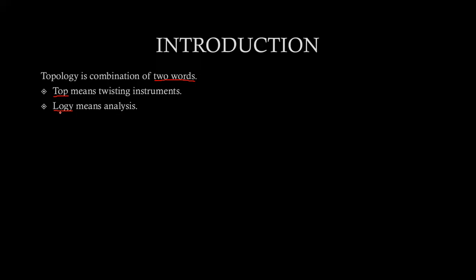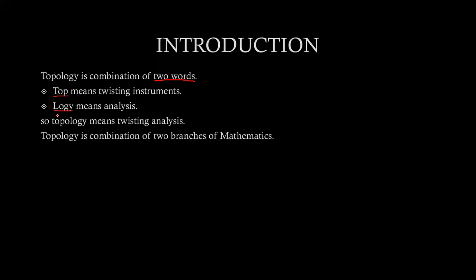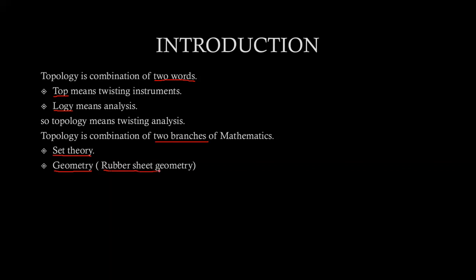Now we are going to discuss which branches of mathematics we will study in topology. In topology we will learn two branches of mathematics, and these two branches are set theory and geometry. Set theory is basically the language of topology, and the geometry we will discuss here is rubber sheet geometry — that is, we will discuss qualitative geometry. As set theory is the language of topology, it means that we will express each and everything in the form of set theory.